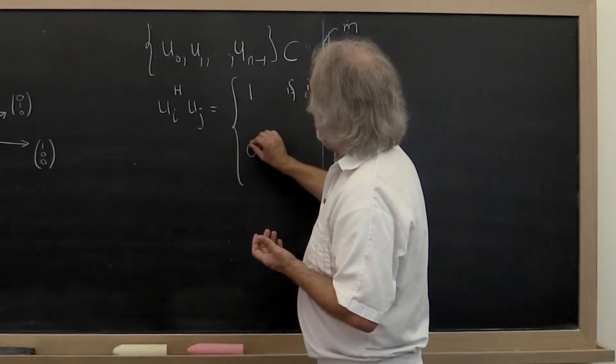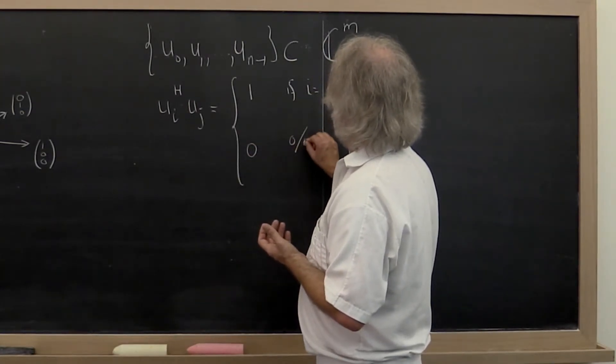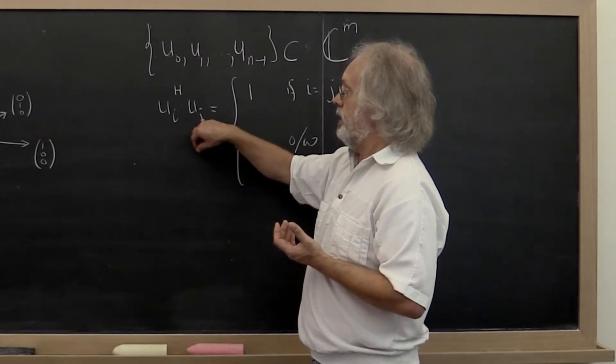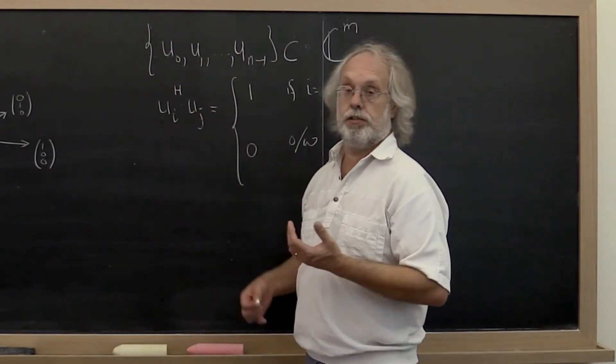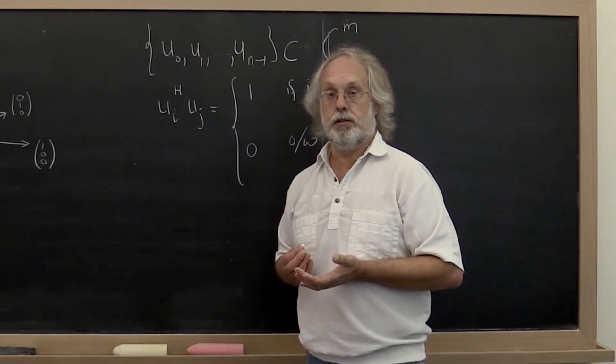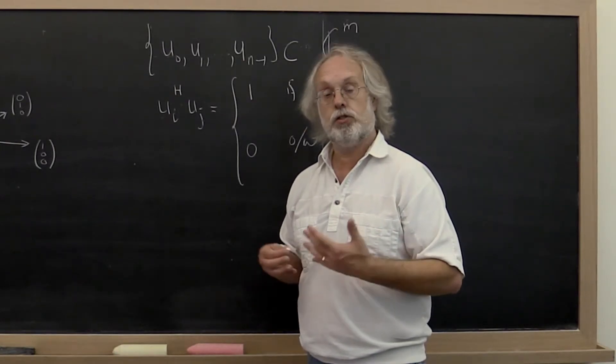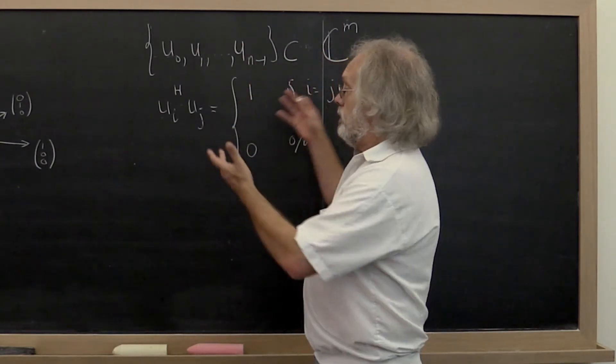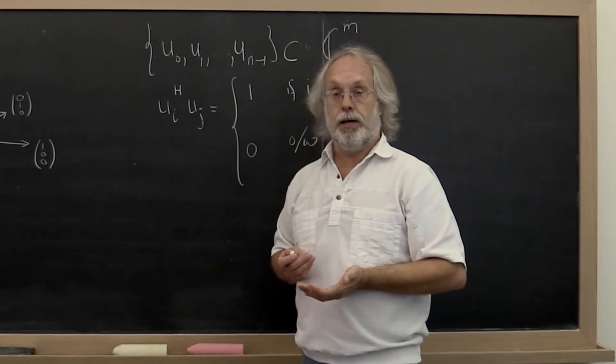Or it evaluates to 0. Otherwise, why? Because if i is not equal to j, then we want those two vectors to be orthogonal to each other. So the formal definition is given in the notes. Conceptually, this is what's going on.